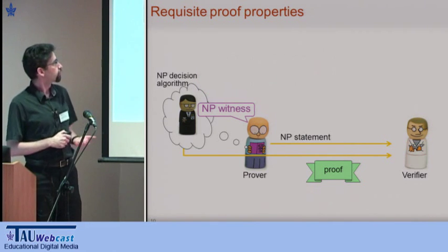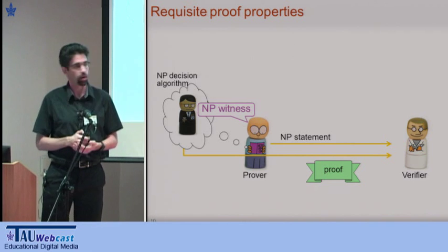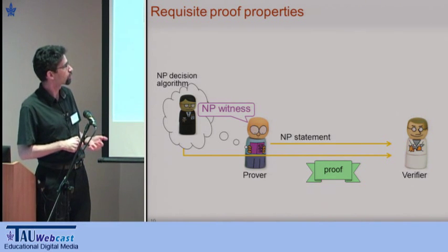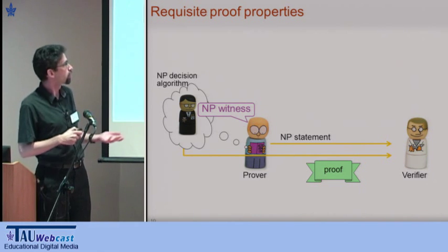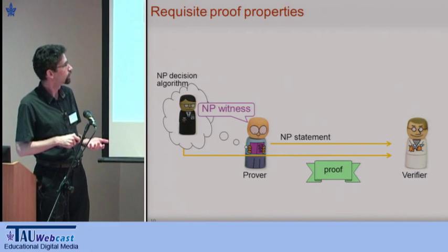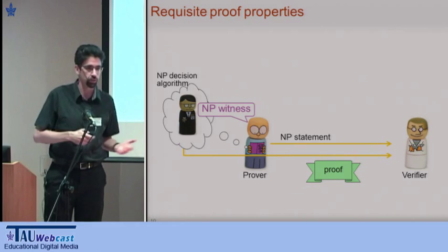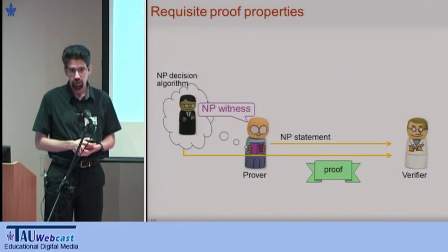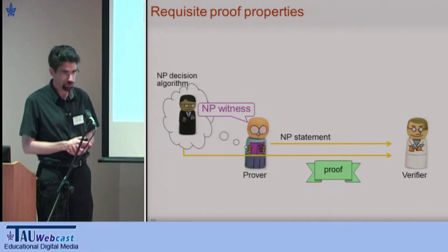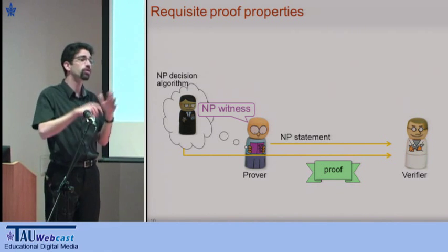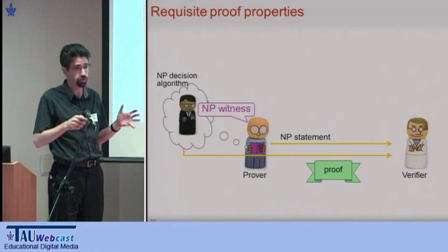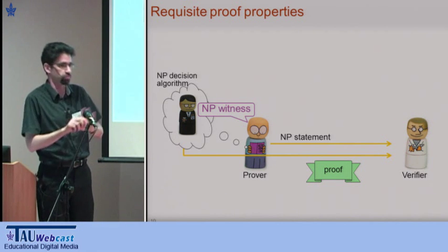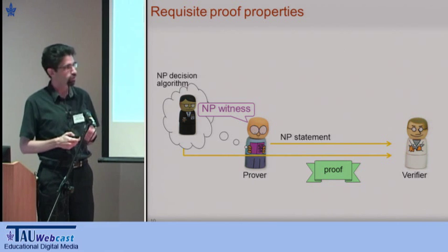We want a proof that this NP statement is indeed in the designated NP language. The statement has to be carefully crafted to not reveal where the coins came from — it has to say that there exists someone I got it from, and that transaction exists in the Bitcoin ledger, but I'm not going to reveal which one. So it is indeed one of the properties we'll need.